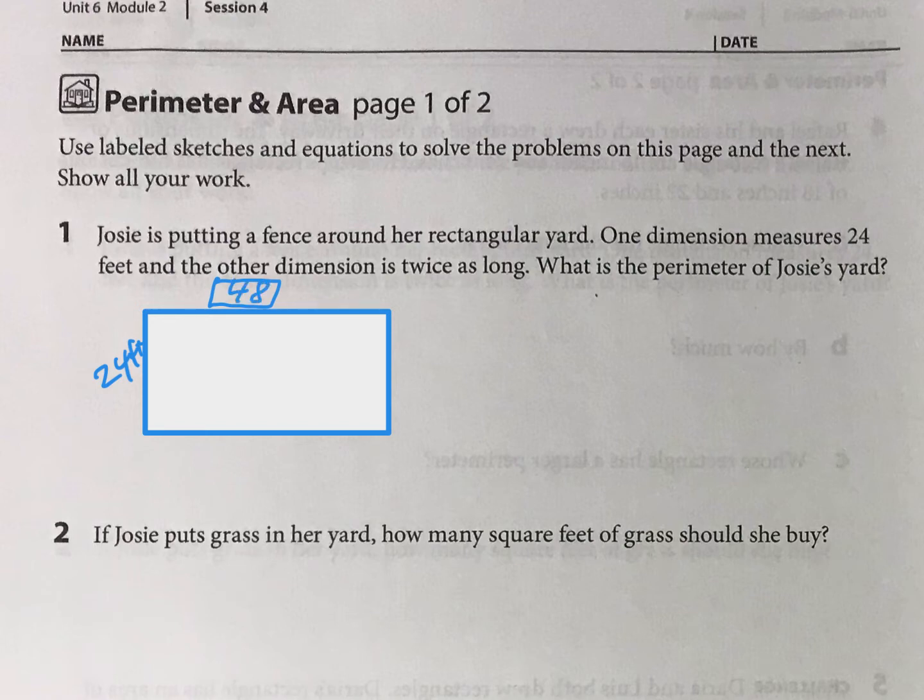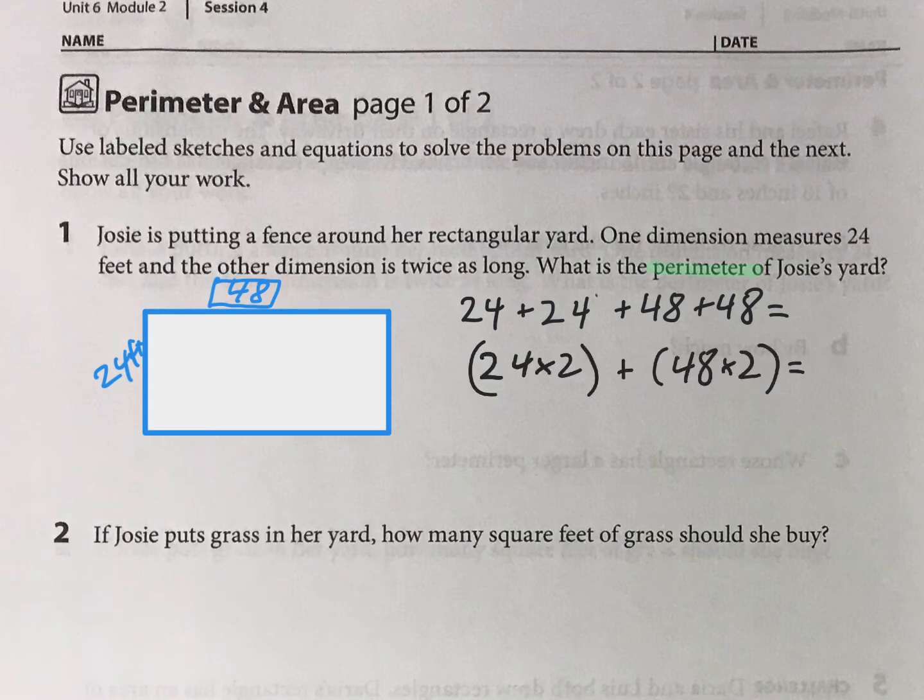Now we're figuring out the perimeter of this, so please remember there's four ways to do that. I could add them all up like that. I could multiply each by two and then add them, or I could add them together and then double that number. So I will let you figure out which method you would like to do, but that would be the perimeter.